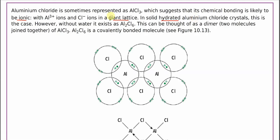Without water, it exists as Al2Cl6. This can be thought of as a dimer, meaning two AlCl3 molecules now form dimers.